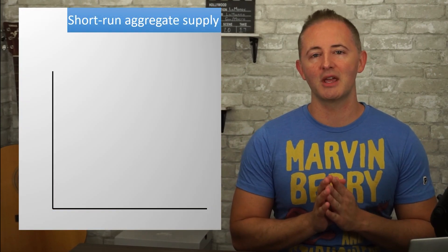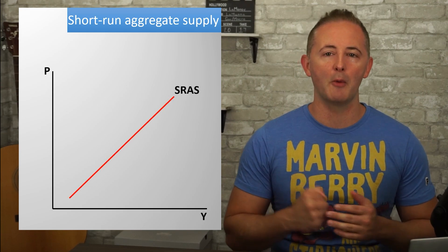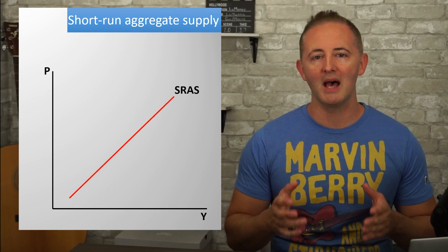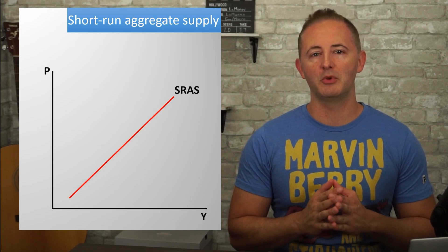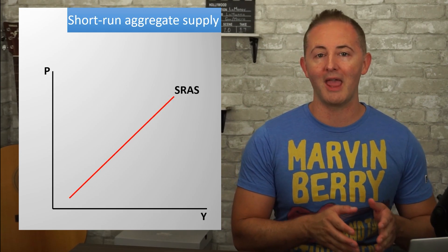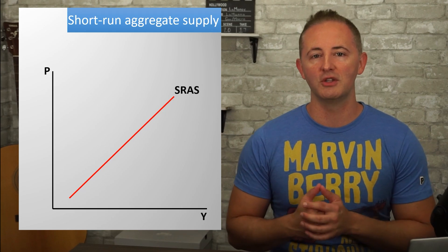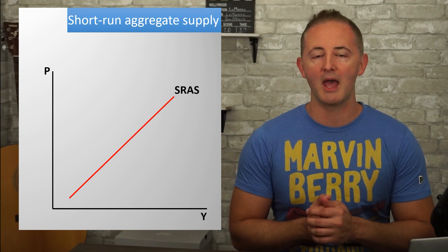The last two videos have been all about aggregate demand, but now we turn our attention to the supply side of things. Not surprisingly, the SRAS curve is upward sloping, indicating a positive relationship between the price level and the quantity of goods and services supplied.